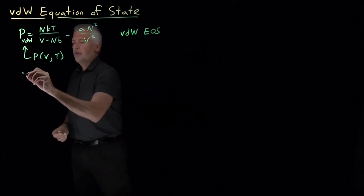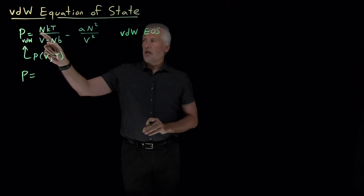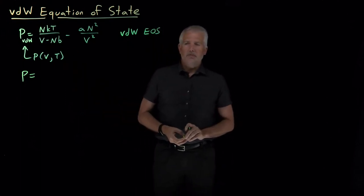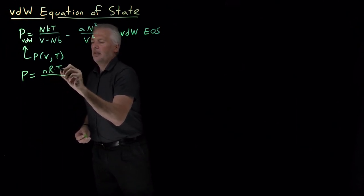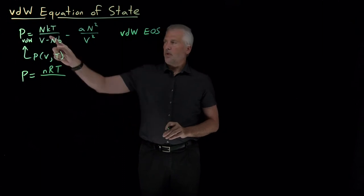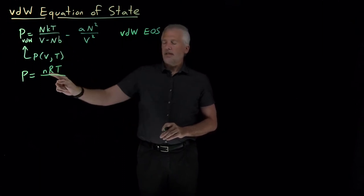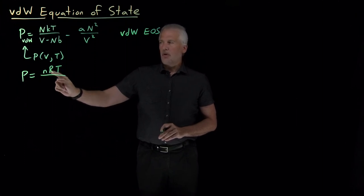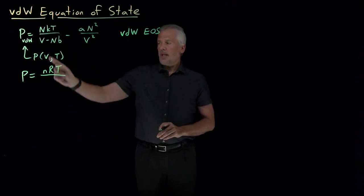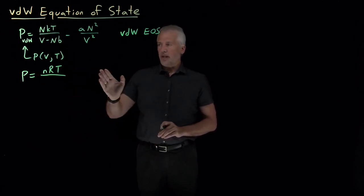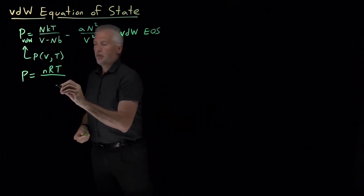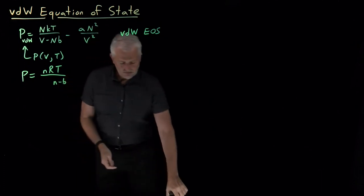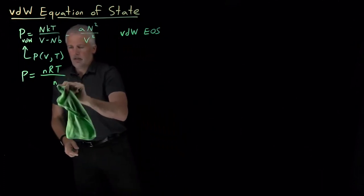It's sometimes more useful to think not in terms of the number of molecules of the gas, but the number of moles of the gas. As we've already seen, if we replace Boltzmann's constant — with units of joules per Kelvin — with the gas constant in units of joules per Kelvin per mole, then multiplying by the number of moles rather than molecules, N·k equals n·R. So I'm going to rewrite this equation in terms of moles rather than molecules, replacing big N with little n.